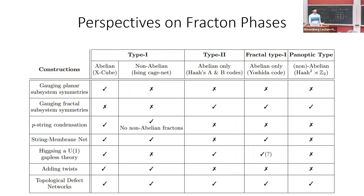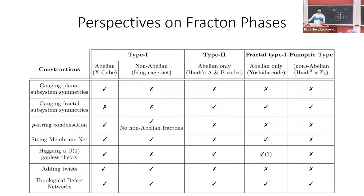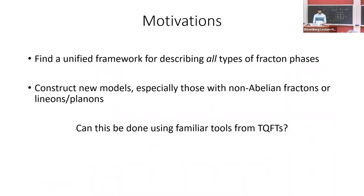There are as many perspectives on these models as there are models themselves. People have tried to approach this fracton problem from a number of different angles, and for each approach there's always an exception. The X-cube model is the simplest and can be understood by all these different approaches. But there are generalizations such as non-Abelian X-cube where some of these techniques don't work. We wanted to understand: is there some general framework for thinking about fractons in which all these different models can fit, and use familiar tools from TQFT as a starting point?